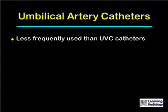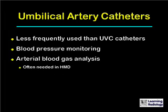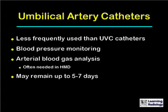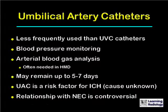Umbilical artery catheters are used less frequently than umbilical venous catheters. They are used for active blood pressure monitoring and to monitor arterial blood gases in infants with hyaline membrane disease. They can remain for up to 5 to 7 days. Umbilical artery catheters are a known risk factor for intracerebral hemorrhage, the cause of which is not entirely known, and their relationship with necrotizing enterocolitis is controversial.